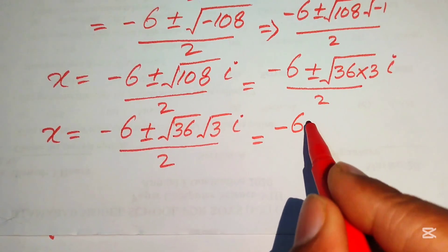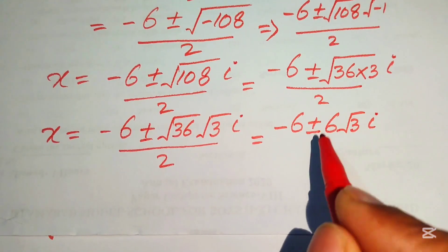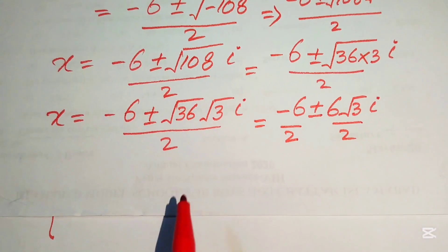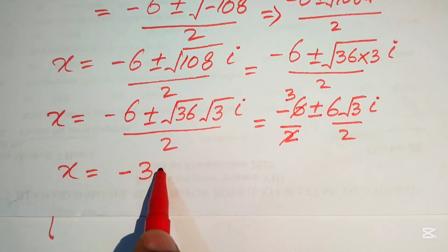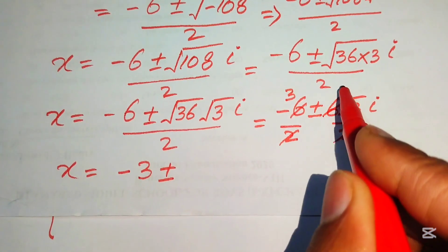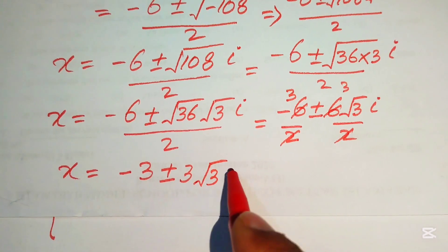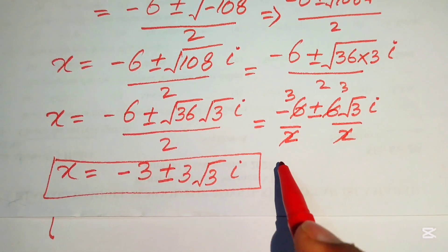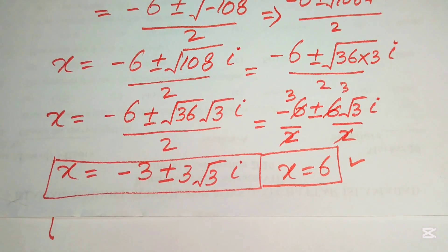The square root of 36 equals 6, giving us negative 6 plus or minus 6·√3·i, divided by 2. Cancelling the factor of 2, we get x equals negative 3 plus or minus 3√3·i. These are the two complex roots. Combined with the real root x equals 6, these are the three solutions of the given equation.